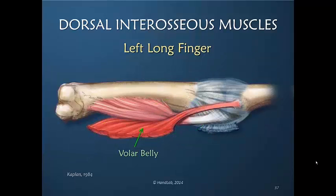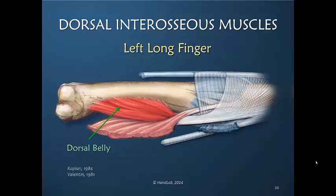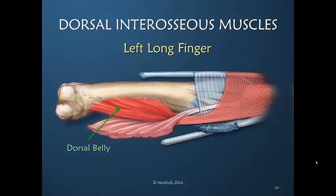The volar belly inserts just distal to the metacarpophalangeal joint and is, in my opinion, the primary muscle belly active during finger abduction. The dorsal belly during finger abduction is busy helping to extend the finger and therefore is only assisting in abduction, but is probably not the primary player. The influence into the dorsal apparatus means that the dorsal belly must share its power of abduction with movement of the finger more distally — that is, interphalangeal joint movement.